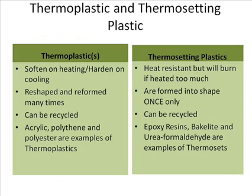Plastics can be broken down into two groups: thermoplastic and thermosetting plastic. Thermoplastics soften on heating and harden on cooling. They can be reshaped and reformed many times and they can be recycled. Acrylic, polythene and polyesters are all examples of thermoplastics.